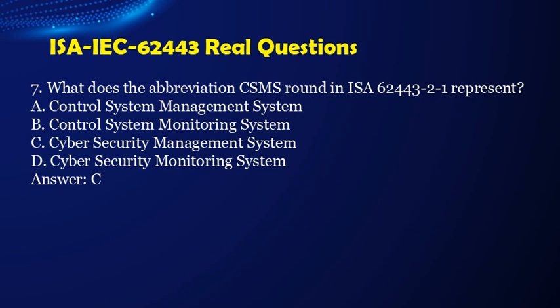Question 7. What does the abbreviation CSMS in ISA/IEC 62443-2-1 represent? a. Control system management system. b. Control system monitoring system. c. Cyber security management system. d. Cyber security monitoring system. Answer: c.